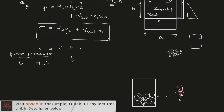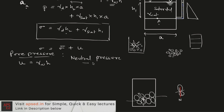Pore pressure is also known as neutral pressure. If we take a point where water is present all around it, the pressure due to water acts equally in all directions. Because the pressure from all directions is the same, there is no net effect on the particle — it will not move in any direction. For that reason we call the pore pressure neutral pressure.